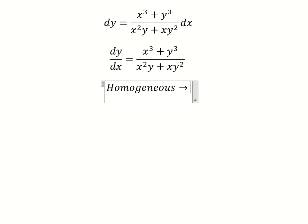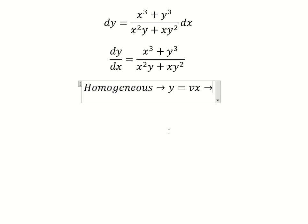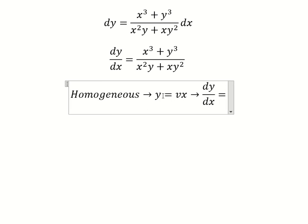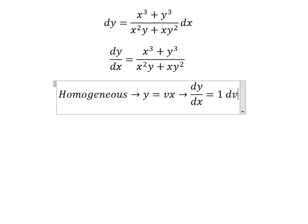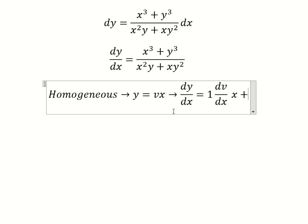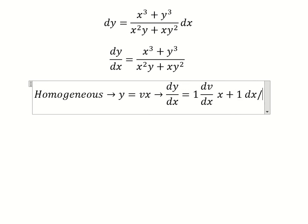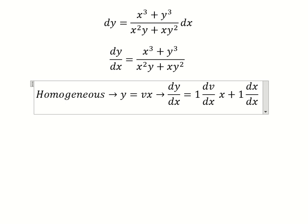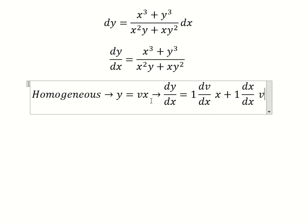So I will put y equals vx. Then we need to do the first derivative for both sides. We have dv over dx multiplied by x, and dx over dx multiplied by v. Now we can simplify this one.